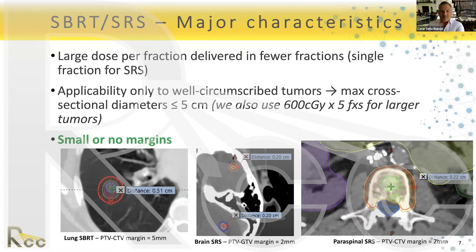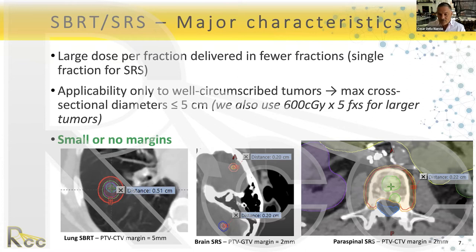The major characteristics of SBRT and SRS are large dose per fraction delivered in fewer fractions — single fraction for SRS or fewer than five for SBRT. Normally we have well-circumscribed, small tumors, like a nice sphere. But sometimes we treat larger tumors, and for paraspinal cases the shape can be irregular, requiring planning techniques that ensure full coverage while protecting normal tissue.